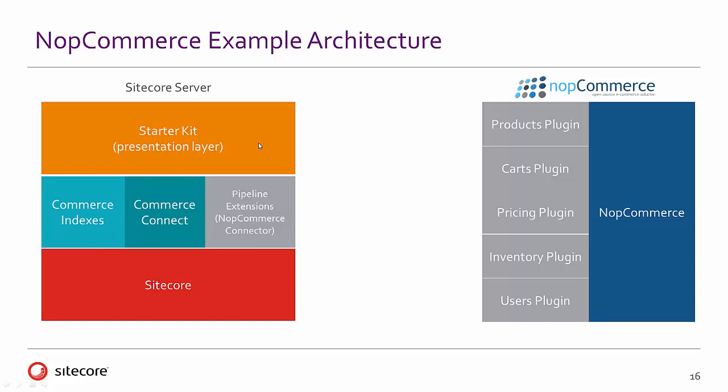The starter kit is an MVC presentation layer. Also note the Commerce Indexes here — if you're using Lucene, Sitecore will build these on startup for you. If you're using Solr, you need to manually create those indexes. This is really the core content architecture that we'll be working with today.